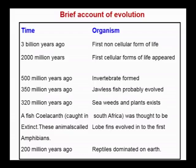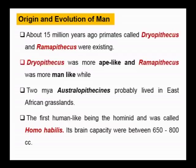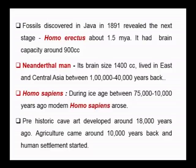Coming to the origin and evolution of man: about 15 million years ago, primates called Dryopithecus and Ramapithecus existed. Dryopithecus were more ape-like and Ramapithecus were more man-like. Two million years ago, Australopithecines probably lived in East African grasslands. The first human-like hominid was called Homo habilis, with a brain capacity of 650 to 800 cc. Fossils discovered in Java in 1891 revealed the next stage, Homo erectus, about 1.5 million years ago, with a brain capacity around 900 cc.